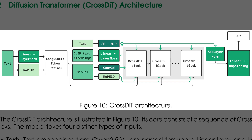The left side processes raw text through a refiner, which cleans up and rebalances language tokens so they work better with the image core. The middle block collects time, CLIP-style text, and visual latents, then feeds them into a stack of crossed IT blocks that repeatedly mix modalities. On the right, an adaptive normalization layer, which adjusts features based on the prompt and time, prepares everything for the final linear and unpatching step that reconstructs the image or video.